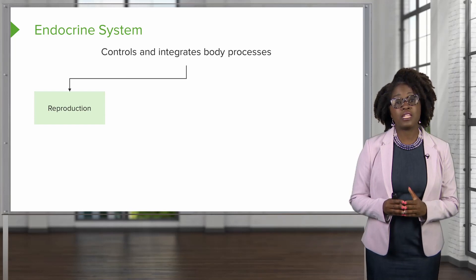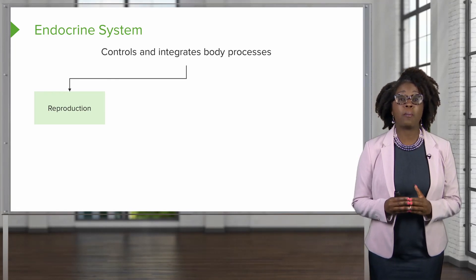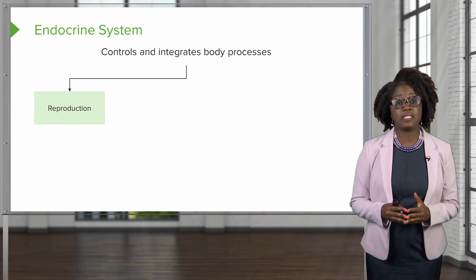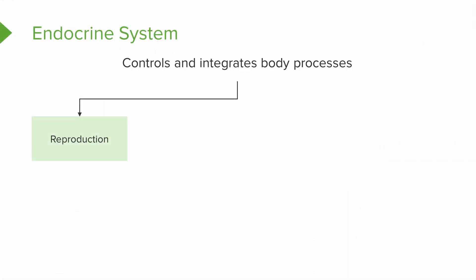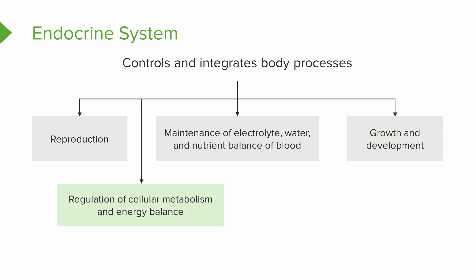So how does the endocrine system actually control and integrate our body's processes? It controls and integrates things like reproduction, maintenance of electrolytes, water, and nutrient balance, growth and development, regulation of our cellular metabolism and our energy balance, and mobilization of body defenses.